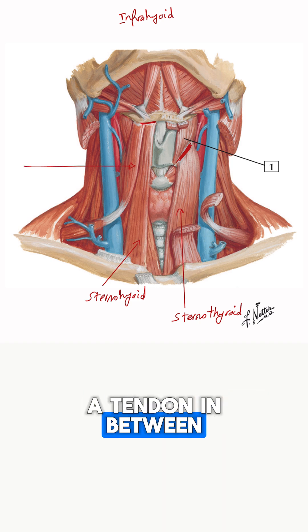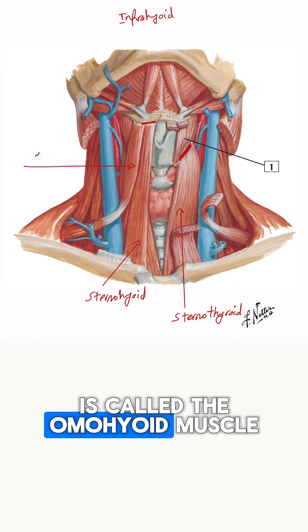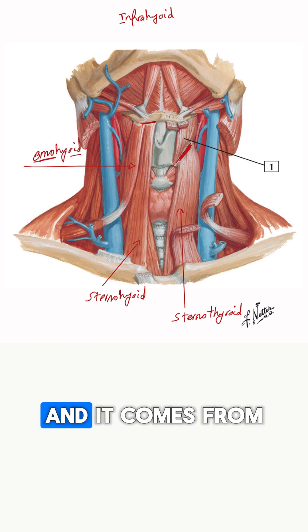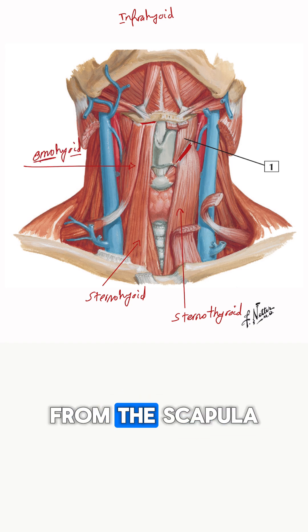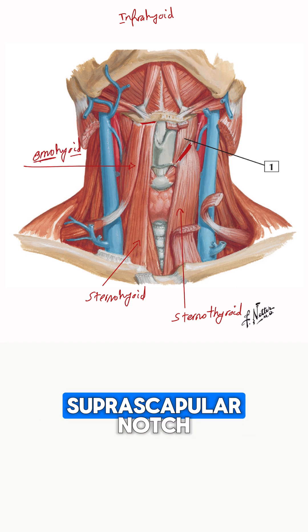This muscle that has a tendon in between is called the omohyoid muscle, and it comes from the shoulder region — from the scapula, just closer to the suprascapular notch.